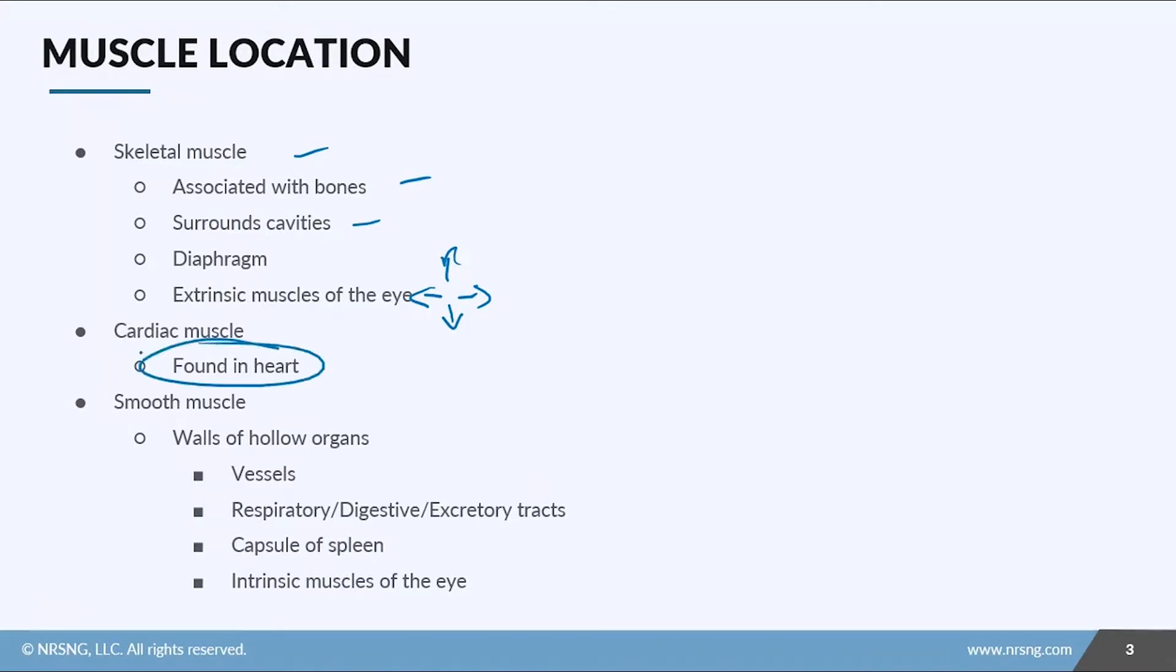Cardiac muscle is only found in the heart, but smooth muscle is found in the walls of hollow organs. You've got your vessels, blood vessels, and aorta. It's also found in the respiratory, digestive, and excretory tracts, and around the capsule of the spleen. Smooth muscle is also found in the intrinsic muscles of the eyes, the iris, and is responsible for the muscles that hold the lens in place and allow the lens to stretch and contract so it can change depending on where we're looking.